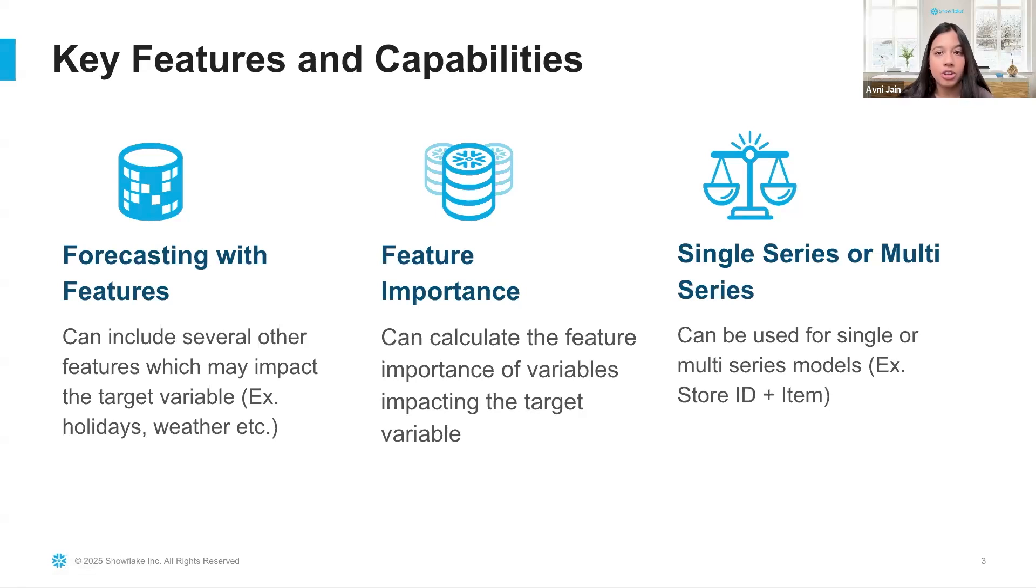With forecasting, you can also calculate the feature importance of variables that are impacting your target variable. So this is particularly useful when you're trying to see what is largely impacting your model's performance and what may also be skewing the model.